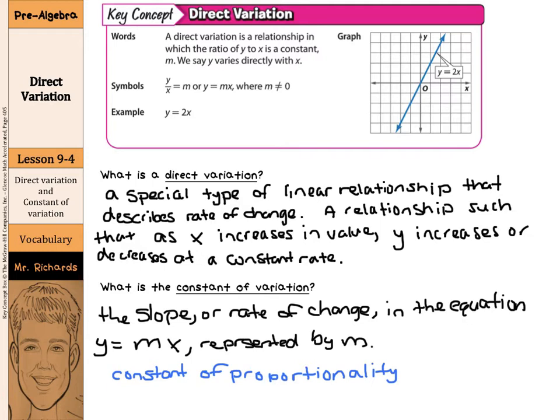And that 2 is our constant of variation or our constant of proportionality as that is our slope. So it relates directly to our constant rate of changes and slope. But just a little bit more detail as we go through this lesson.